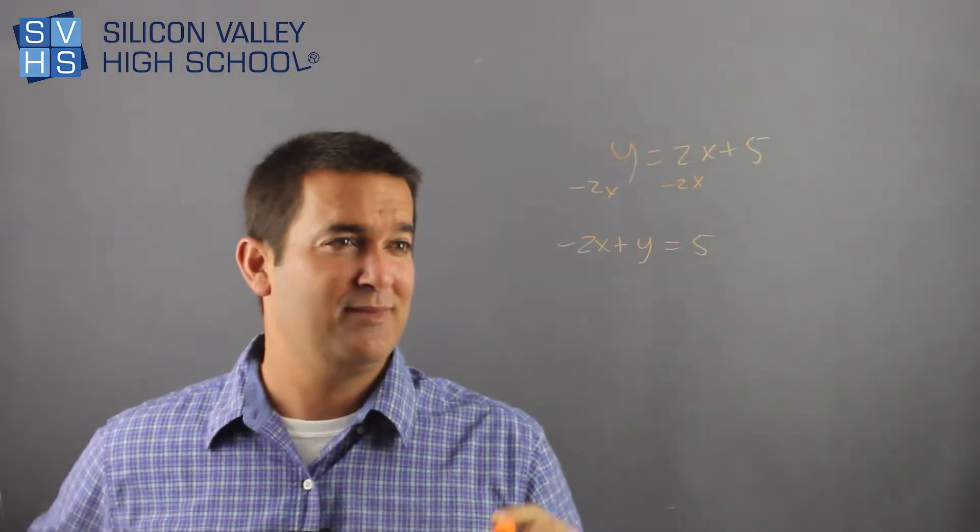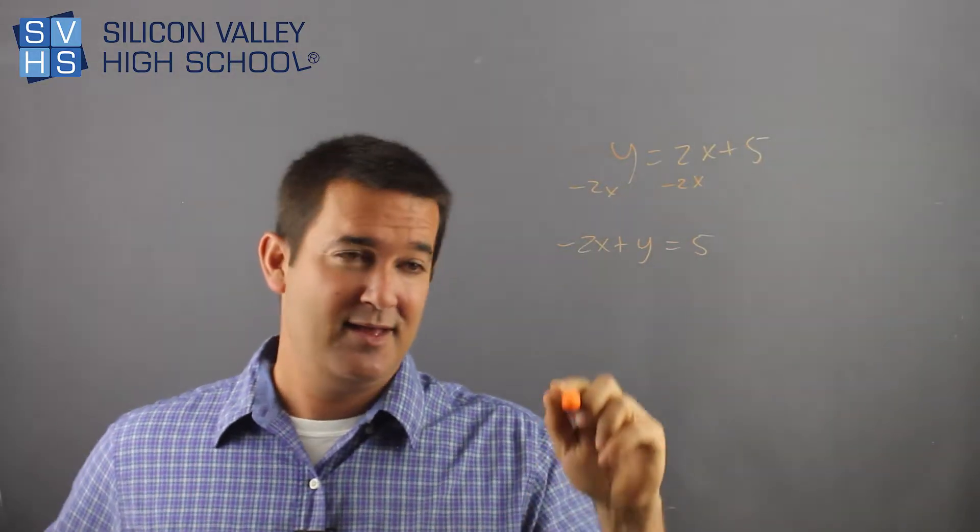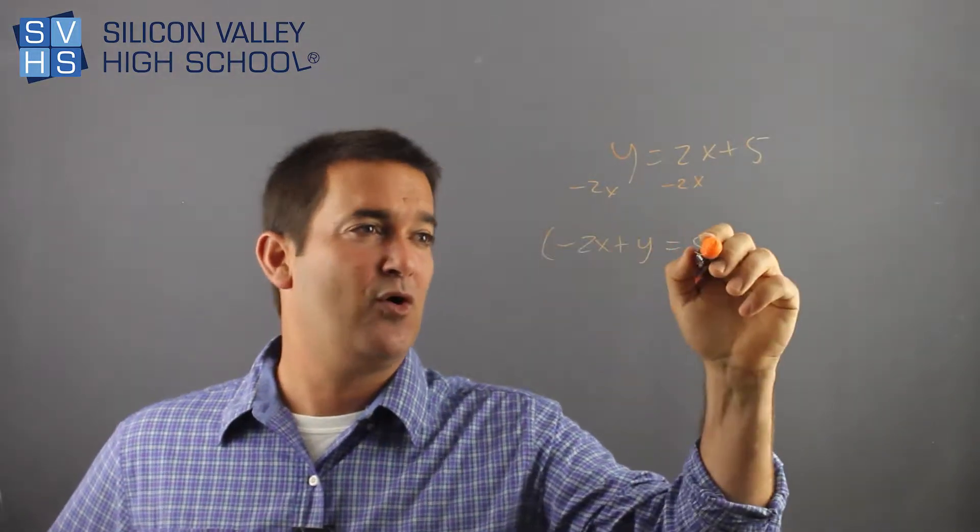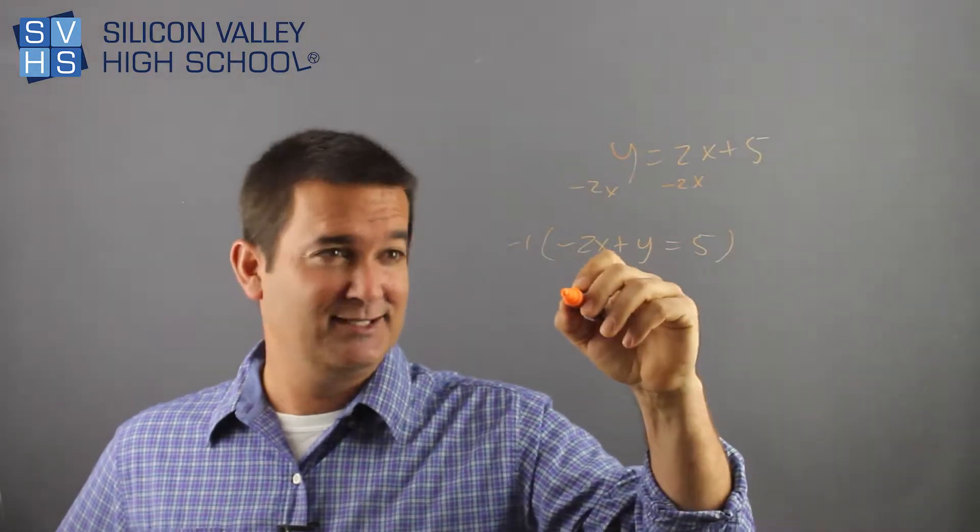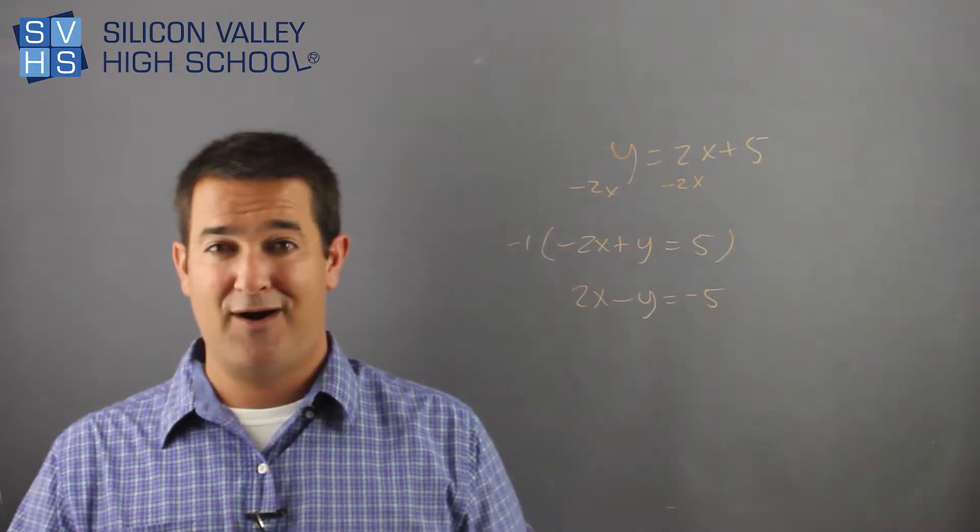This is not okay for standard form because that's a negative two x. It's not a fraction so we're cool there, but the negative is not cool. So I'm going to multiply the whole problem by negative one. Everybody changes, so I have two x minus y equals negative five. Now I'm totally done.